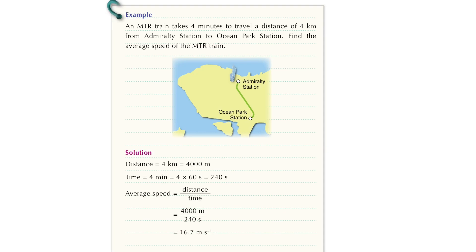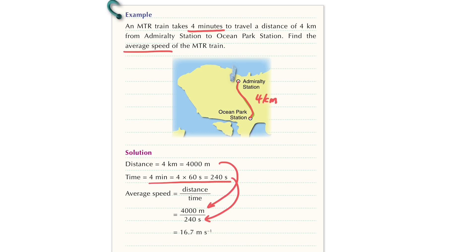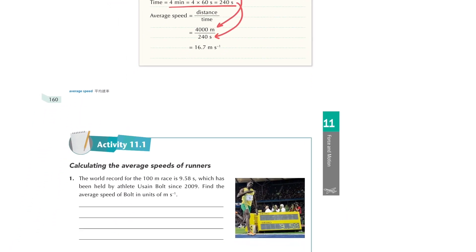Consider this example: an MTR train takes 4 minutes to travel from one station to Ocean Park station, and the distance between these two stations is 4 km. We use the equation average speed equals distance over time. Since we want the unit in meter per second, we must first convert km to meters and 4 minutes to seconds, then substitute the values to get the answer. Usually we take three significant figures to represent the answer.